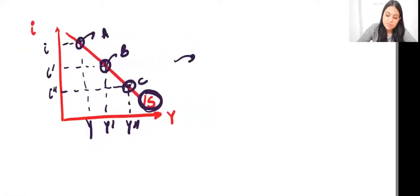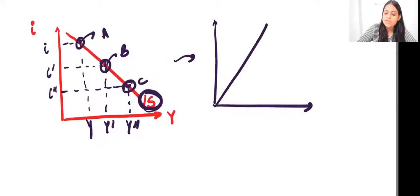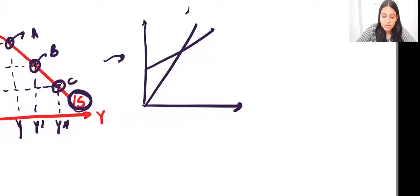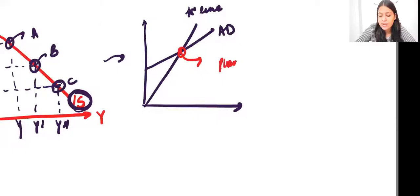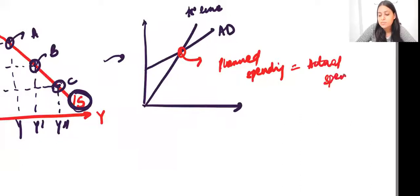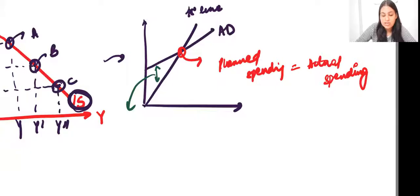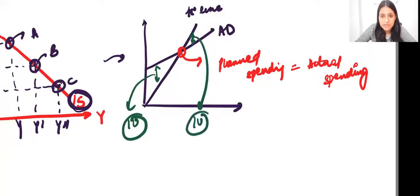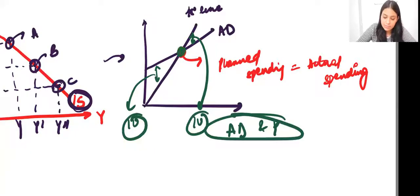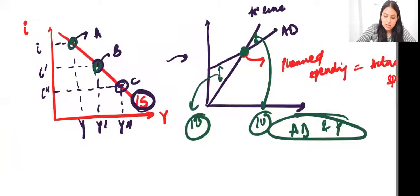This IS curve is derived from the equilibrium we studied in the previous chapter, where the 45-degree line shows that planned spending and actual spending are equal. At other points, there is unplanned investment IU, where aggregate demand and actual output are different. Wherever the two are equal, those points are shown by the IS curve.